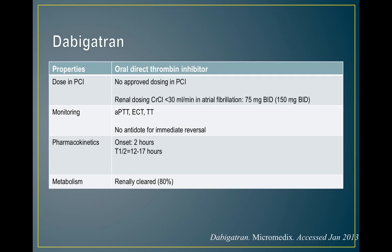Dabigatran is the newest direct thrombin inhibitor and currently has no approved dosing in PCI patients. It is dosed for atrial fibrillation at 150 mg twice daily, or 75 mg twice daily for CrCl less than 30. No routine monitoring is required. It has a quick onset of about 2 hours and is approximately 80% renally cleared. Some studies have examined dabigatran in ACS patients, but a concern is that the RE-LY trial — its major AFib trial — found an increased risk of MI, a finding confirmed by post-hoc analysis.